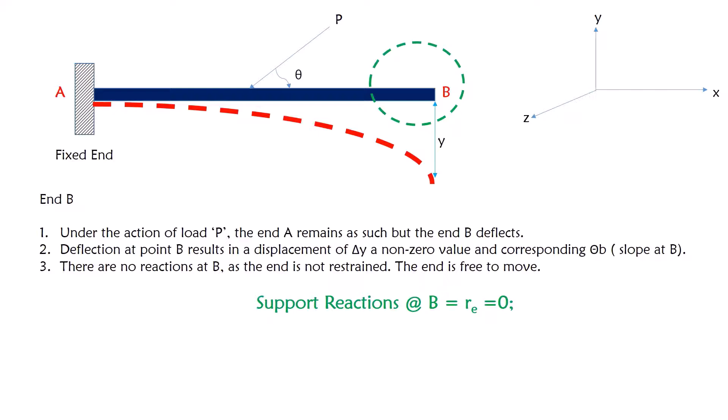We will see that end B has deflected from a point, say B to B1 at a distance of Y, which is the deflection provided. Under action of load P, the end A remains as such but the end B deflects. Deflection at point B results in a displacement of a value which is a non-zero value. This deflection pattern will have a slope corresponding to that deflection, which is given by theta B.